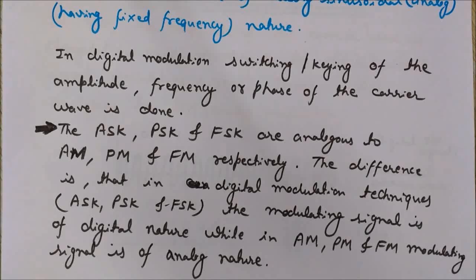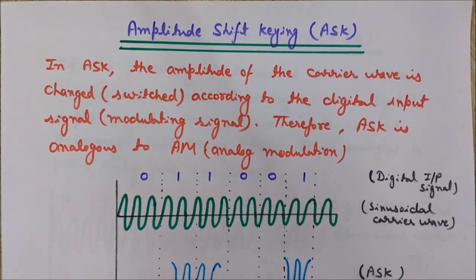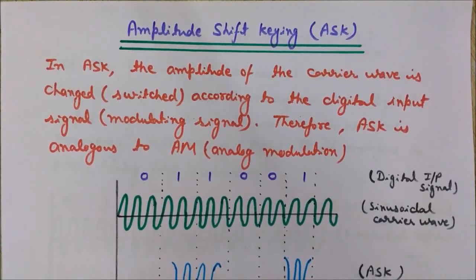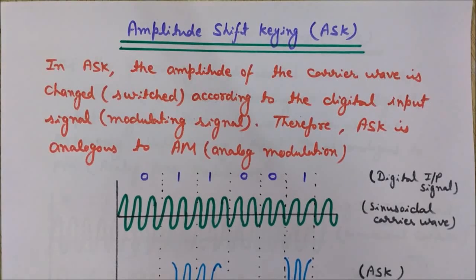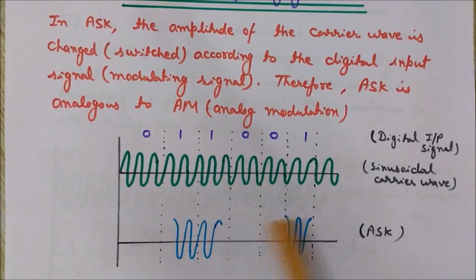Now we will discuss ASK in detail. In amplitude shift keying, ASK, the amplitude of the carrier wave — which is of analog nature — is changed, or switched, according to the digital input signal. Since the modulating signal is of digital nature, ASK is analogous to AM. In AM we also vary the amplitude of the carrier wave, but according to the instantaneous value of an analog message signal. Here, we switch the amplitude of the carrier wave according to the digital input signal.